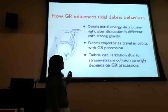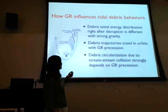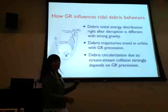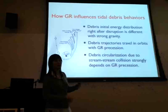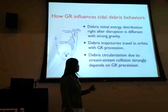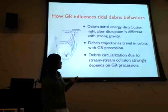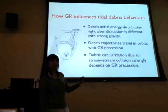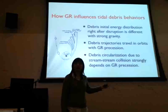For this talk, I'm going to discuss how GR influences tidal debris behaviors. The outline is: GR can influence the disruption process and the debris initial energy distribution right after disruption, especially if the star approaches the black hole very close. After the disruption process, the debris trajectories will travel in relativistic orbits with GR precession, which produces differences from the Newtonian model. This can give us a debris circularization mechanism using stream-stream collision due to GR apsidal motion, while nodal precession from black hole spin may reduce or eliminate this.